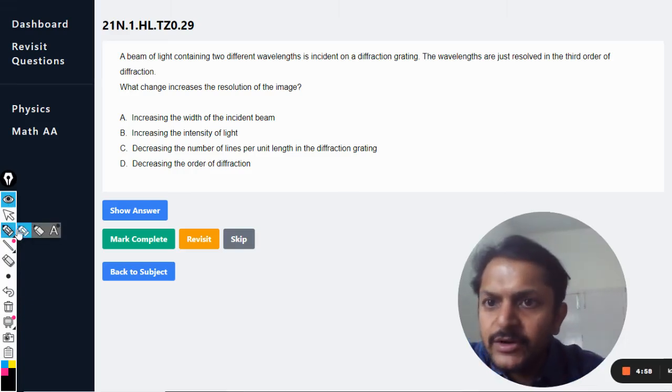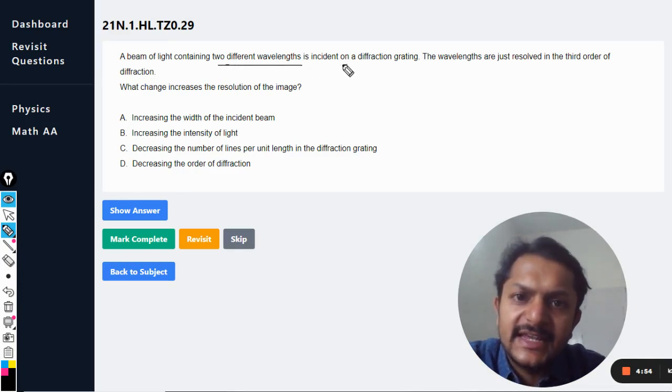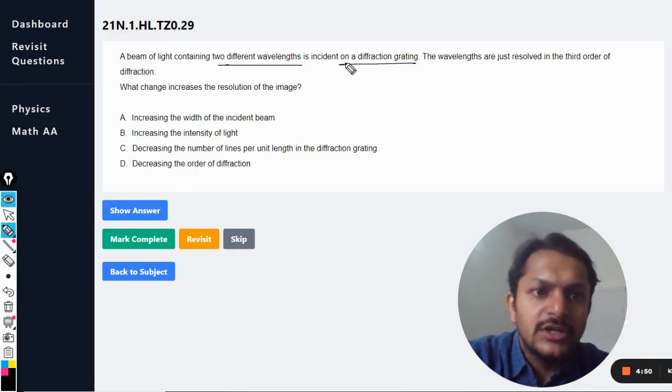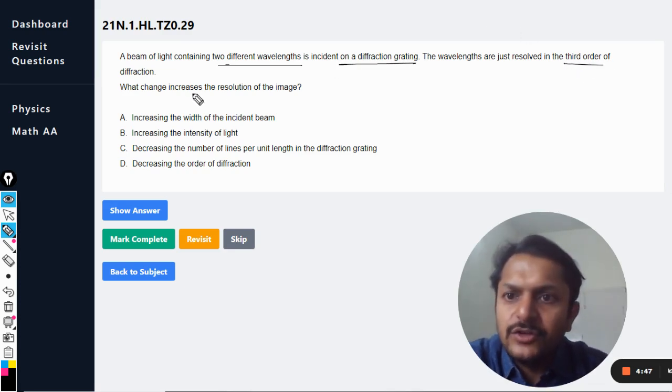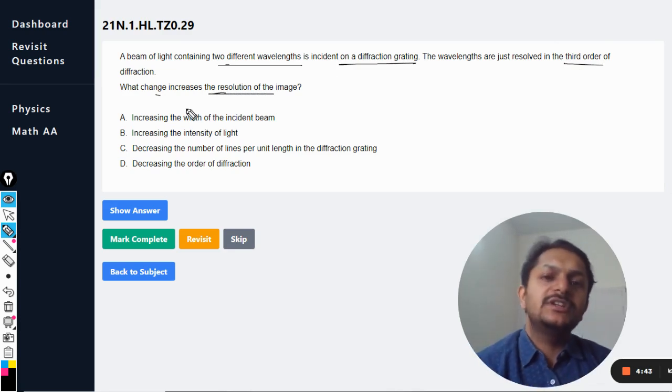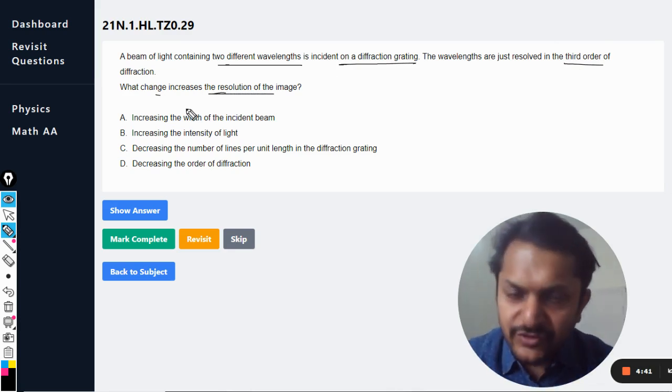Okay dear students, let us see what is there in this question. A beam of light containing two different wavelengths is incident on a diffraction grating. The wavelengths are just resolved in the third order of the diffraction. What change increases the resolution of the image? So my dear students, this question belongs to the topic of diffraction grating.